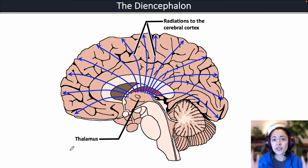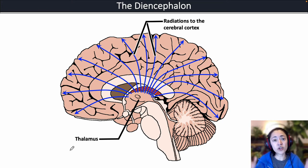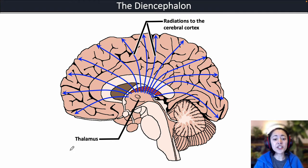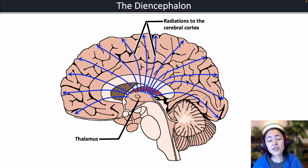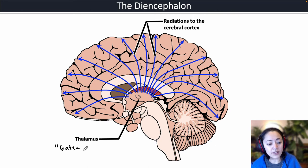In order for us to be conscious, or in other words aware of any of our senses, that nerve signal must reach our cerebral cortex. All conscious sensory information must go through the thalamus before it reaches the cerebral cortex, except smell. That is why we call the thalamus the gateway to the cortex.